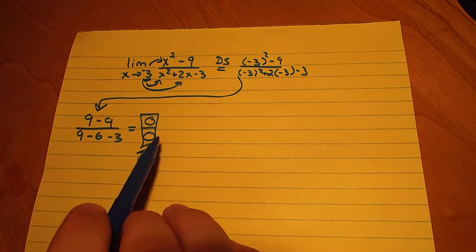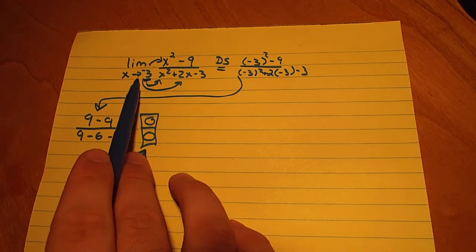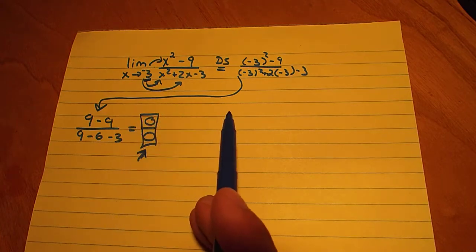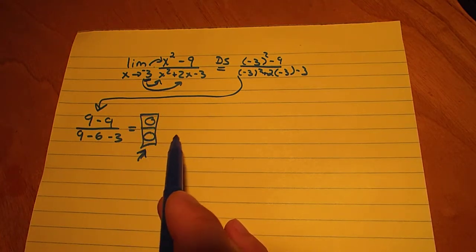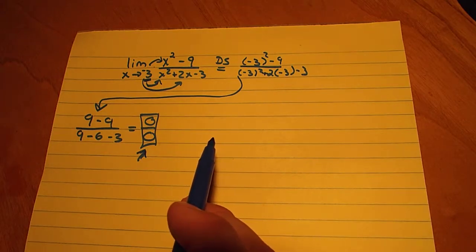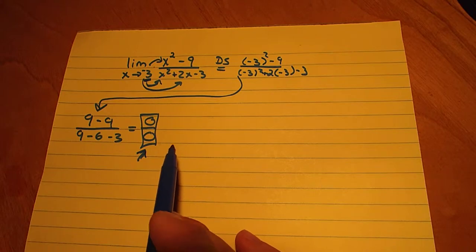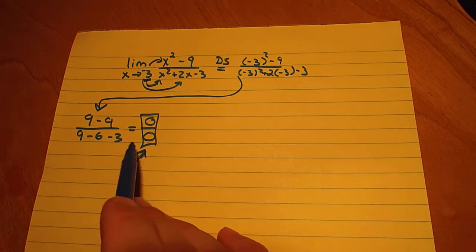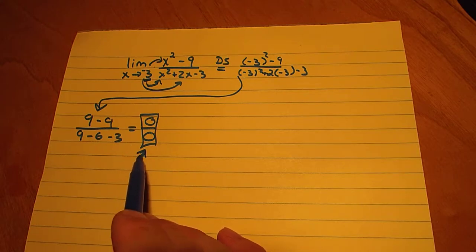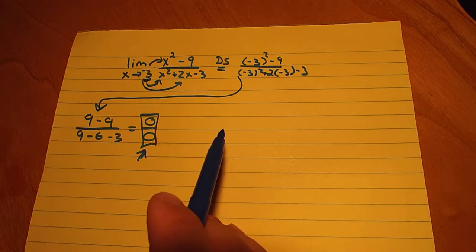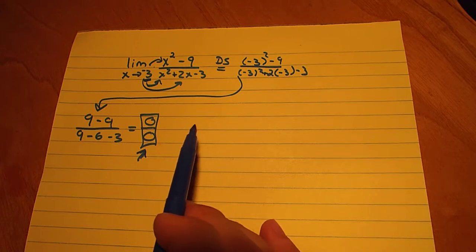So from this setup and the way this expression is set up in this limit, we cannot solve for the limit as x approaches negative 3, which could mean a multitude of things. It could mean there's an asymptote or a hole in the graph. So one strategy we use is when direct substitution does not work, we try to algebraically rearrange the expression in such a way that we can actually have a solvable limit.